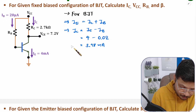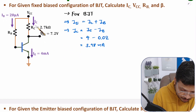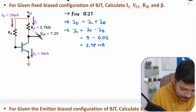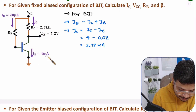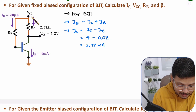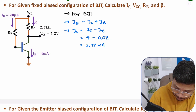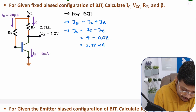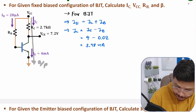Now, at the output side, we have collector current, collector resistance, emitter current, and VCE. From these we can easily calculate VCC by applying KVL at the output. So let us apply KVL at the output over here.